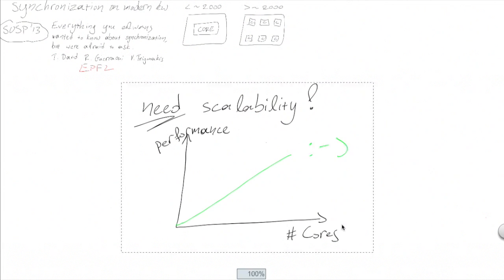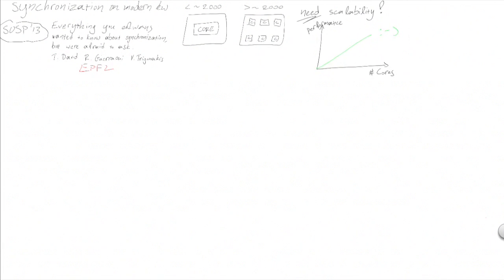One of the biggest impediments to scalability is synchronization. Synchronization is the coordination of concurrent accesses to some shared data and is deployed in order to ensure the consistency of this data.